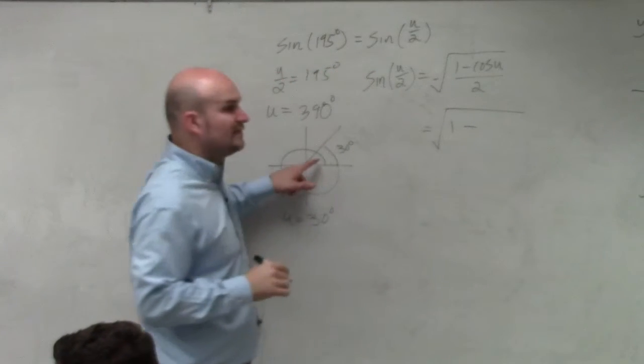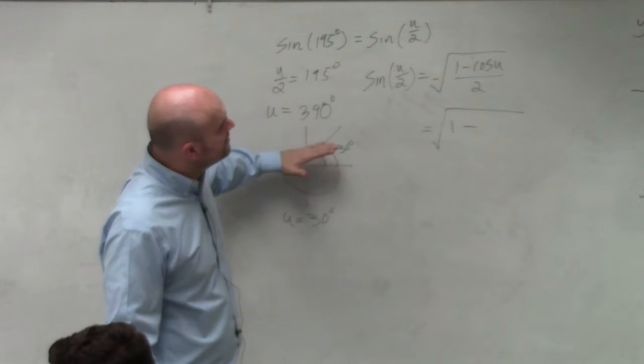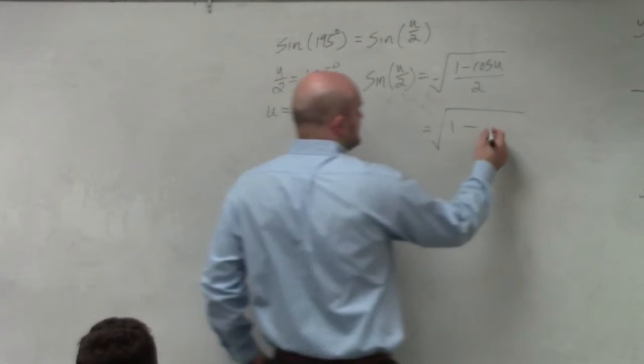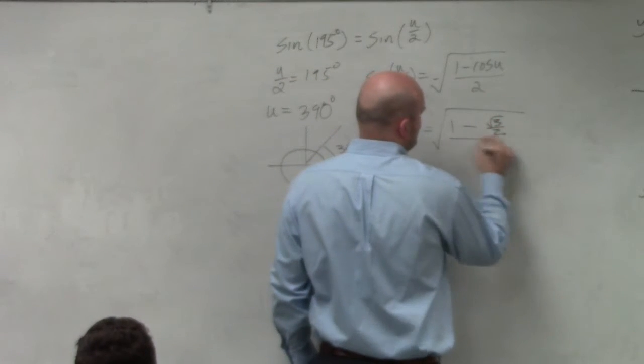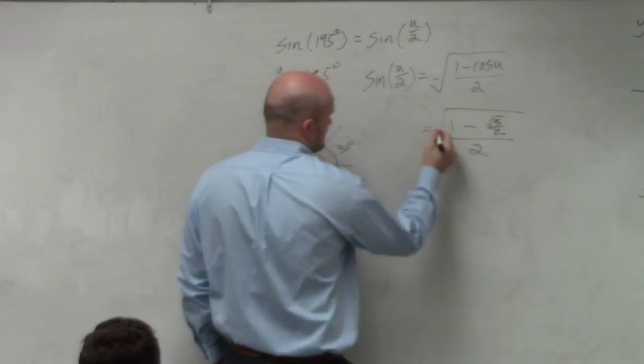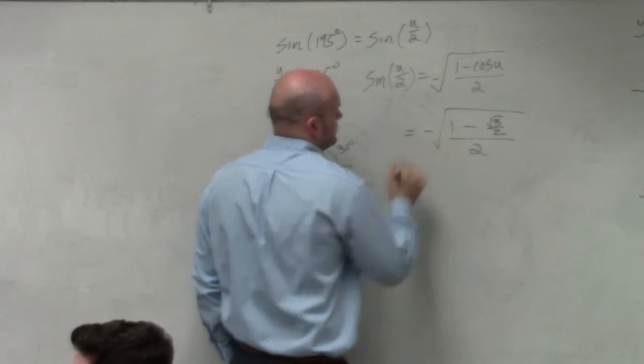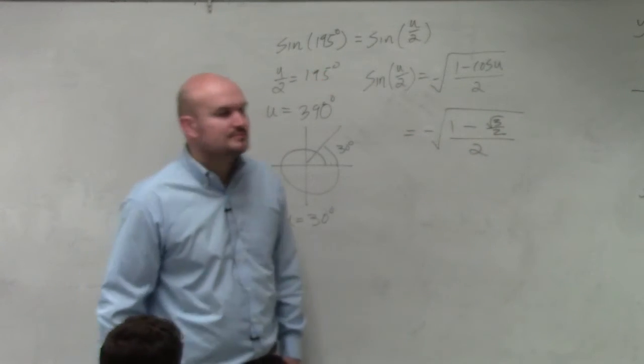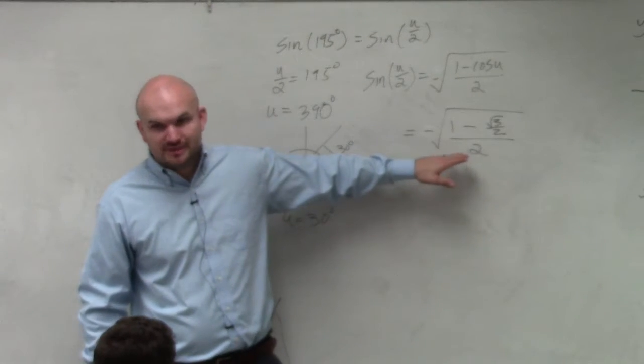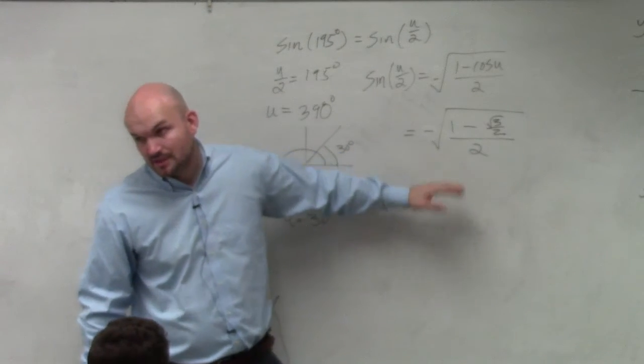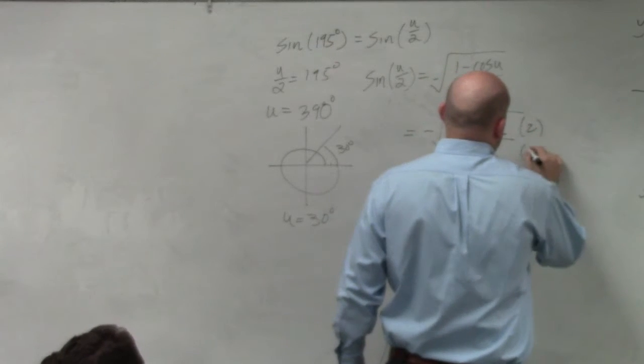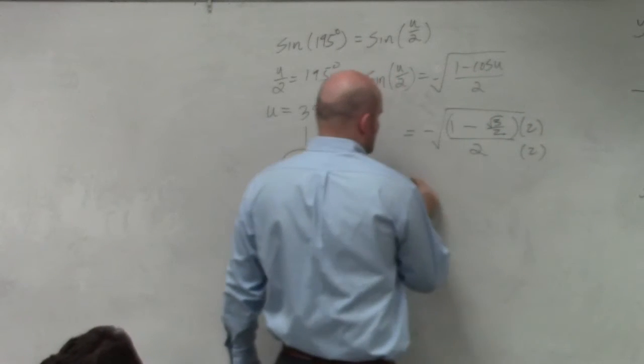Now we just need to figure out the cosine of 30 degrees, which is going to be square root of 3 over 2. Now again what I'd prefer to do is get rid of my denominator 2. So what I'm going to do is multiply everything on the top and the bottom by 2.